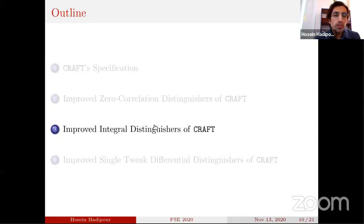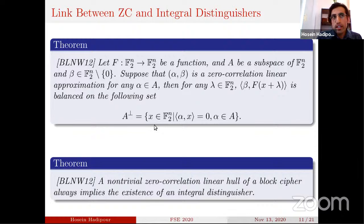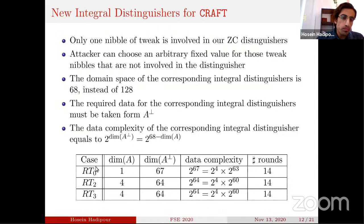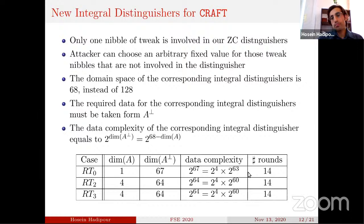Bogdanov and others at Asiacrypt 2012 revealed the fundamental relation between integral and zero-correlation distinguishers: zero-correlation distinguishers can always be converted to integral distinguishers for the same number of rounds. We use this relation to convert our new zero-correlation distinguishers to integral distinguishers. All of them cover up to 14 rounds of CRAFT, improving the previous results by one round.